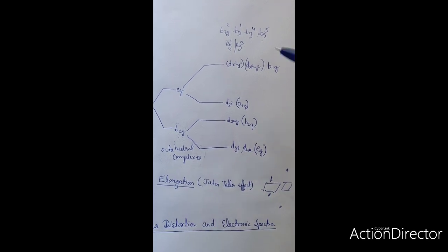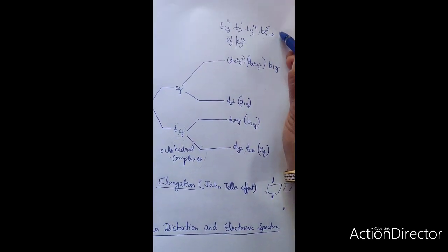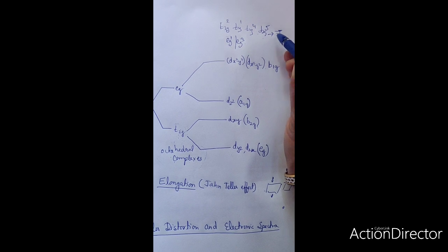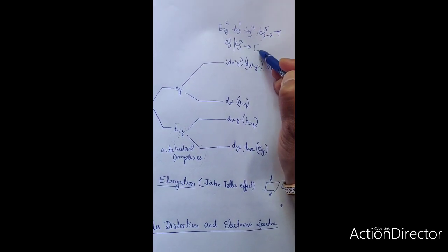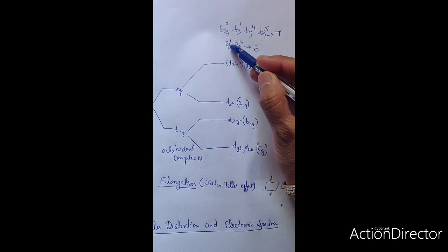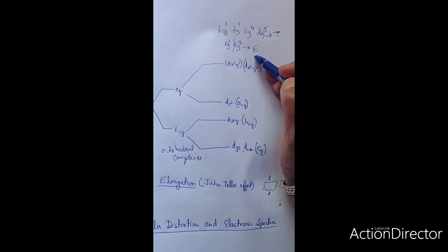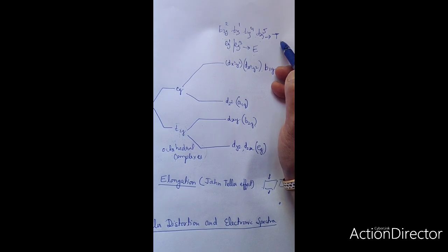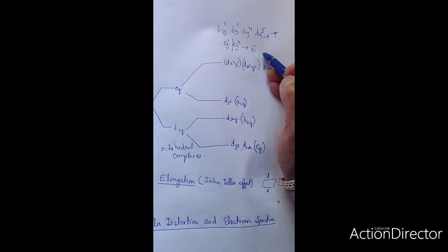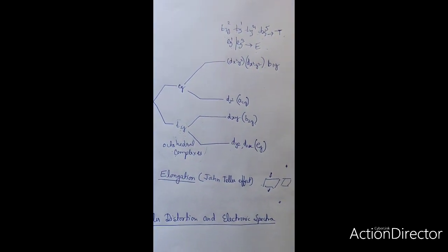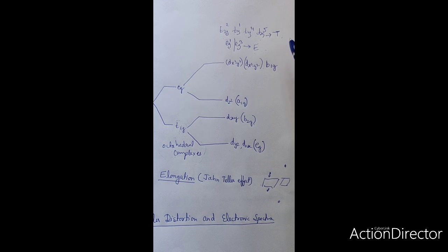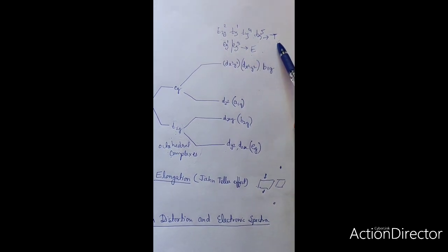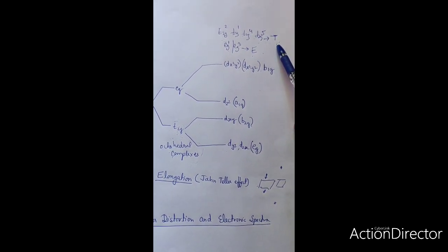We can say that this is the case of a T term — T is asymmetrically filled. This is an E term because the electron can be arranged in dx²-y² or in dz². In case of E and T terms, Jahn-Teller distortion can occur. So if the ground state or excited state has an E or T term, then Jahn-Teller distortion occurs.